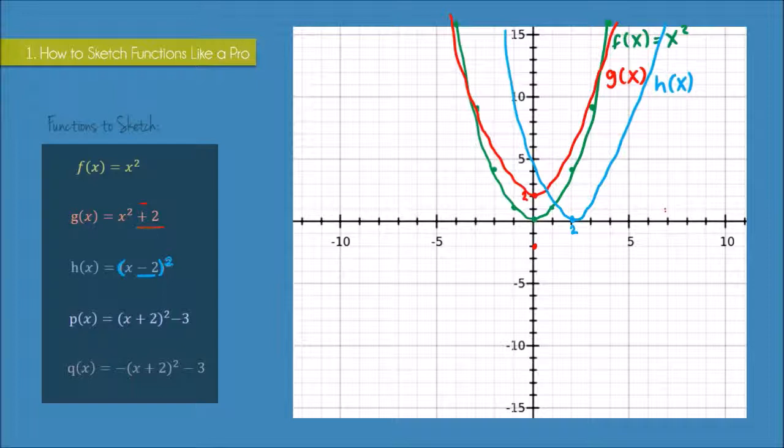So then you can imagine as well that if I had (x + 2)² its turning point would be here at negative 2.